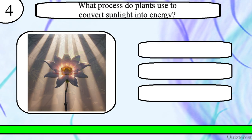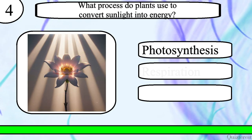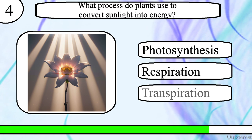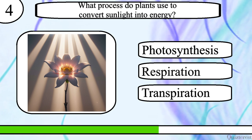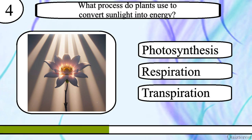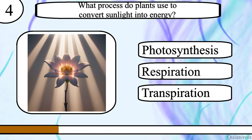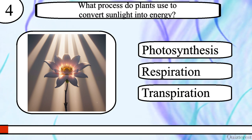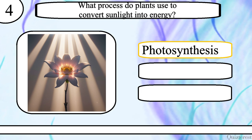Question 4. What process do plants use to convert sunlight into energy? Photosynthesis, respiration or transpiration? The correct answer is photosynthesis.